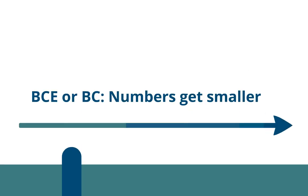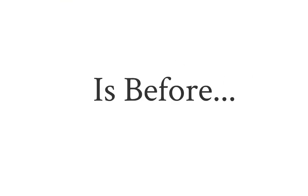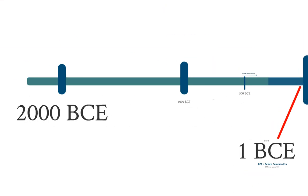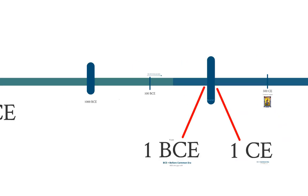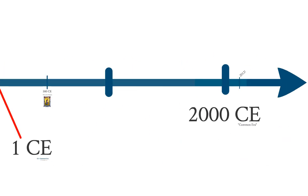So BCE or BC, those are still the same. The numbers still do the same thing. They still get smaller. So 1000 BCE is before 500 BCE. And everything that was in BCE, meaning before Common Era, is before CE, which is the Common Era.